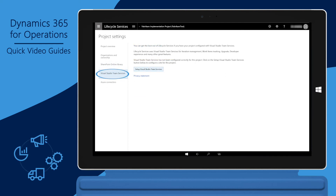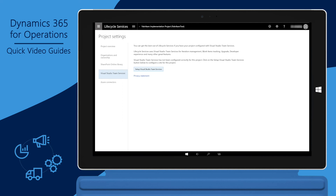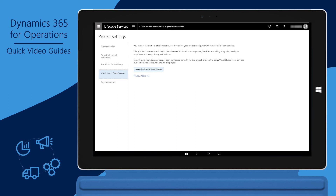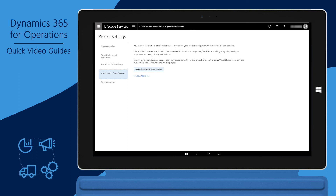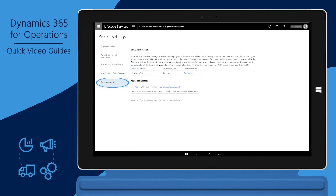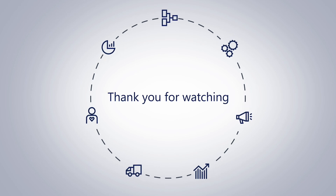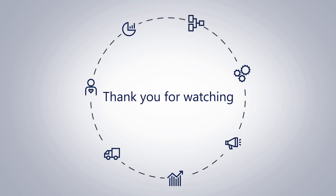Connecting your LCS project to Visual Studio Team Services allows you to track work items for the project, track support incidents as work items, and deploy build agents for the build environment. We recommend that you watch the quick video on configuring VSTS. Additionally, you can add or authorize an Azure connector for cloud-hosted deployments. This brings us to the end of this presentation. We hope you found the information useful. Thank you for watching.